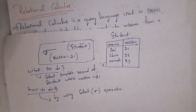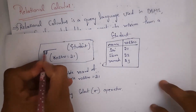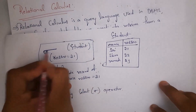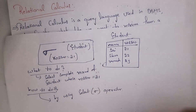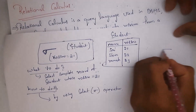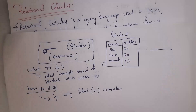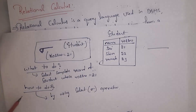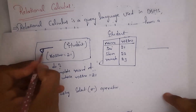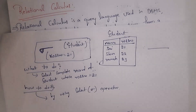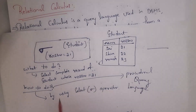For example, there is a student table and I want to select the complete record of the student whose roll number is 21. For that purpose I need to write the relational algebra operation — that is, select sigma, where sigma stands for select — with the condition roll number equals 21 from the student table. Whenever I perform this operation I will get the output displaying the complete record of the student whose roll number is 21. So in relational algebra we specify what to do as well as how to do it; how to do it means we give the procedure to find the query result. That is why we call relational algebra a procedural query language.